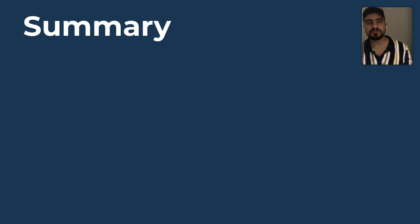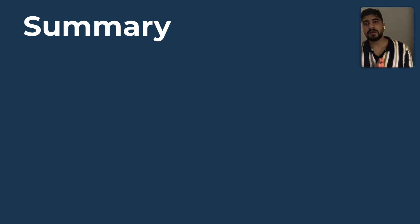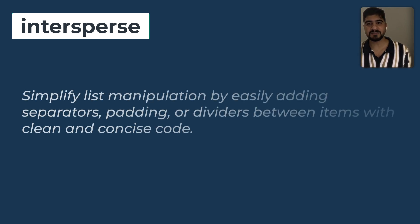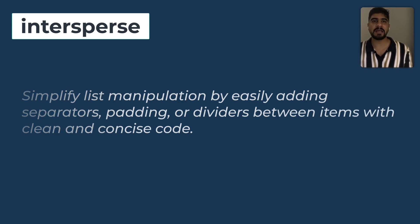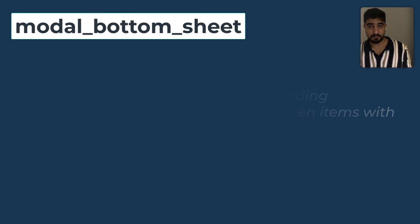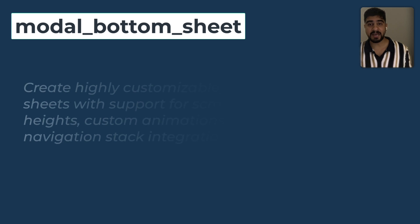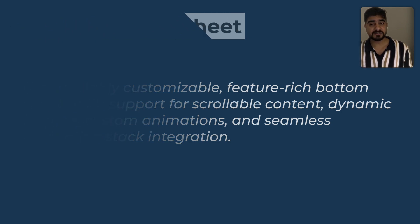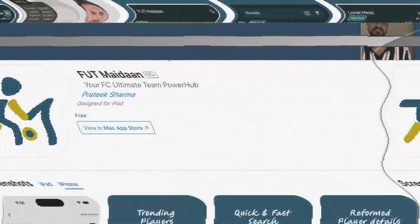So to summarize — in this video we explored some of the most essential Flutter packages that you can use to elevate your app development in 2024. Here is a quick recap: Intersperse simplifies list manipulations by easily adding separators, padding, or dividers between items with clean and concise code. Modal bottom sheets let you create highly customizable, feature-rich bottom sheets with support for scrollable content, dynamic heights, custom animations, and seamless navigation stack integration.